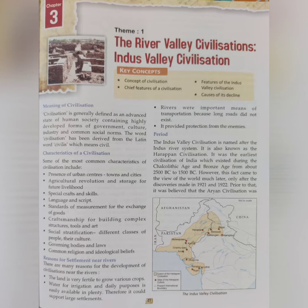Now let's talk about the characteristics of a civilization. Some of the most common characteristics include: first, the presence of urban centers — towns and cities; second, the agricultural revolution and storage for future livelihood, meaning they practiced agriculture to grow crops and stored food for the future.